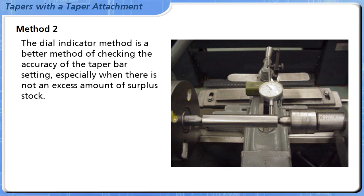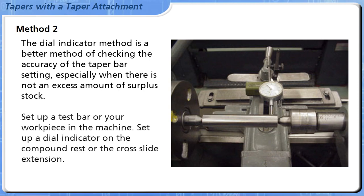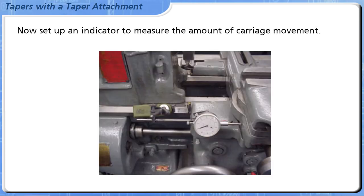Method 2: The dial indicator method is a better method of checking the accuracy of the taper bar setting, especially when there is not an excess amount of surplus stock. Set up a test bar or your workpiece in the machine. Set up a dial indicator on the compound rest or the cross slide extension. Now set up an indicator to measure the amount of carriage movement.